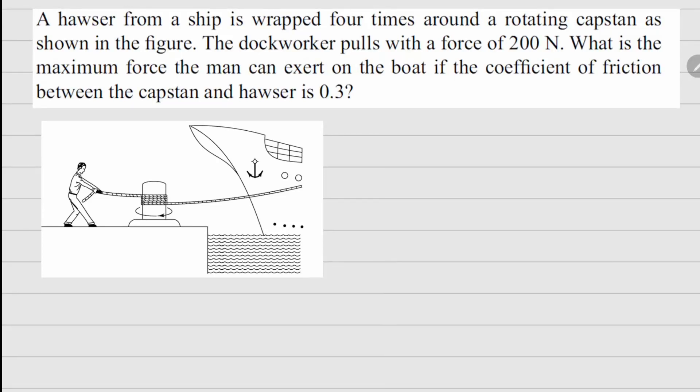This one is problem 2.29. It says a hawser or a rope from a ship is wrapped four times around a rotating capstan as shown in the figure.